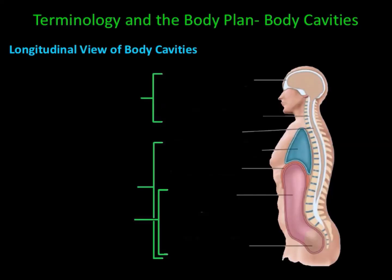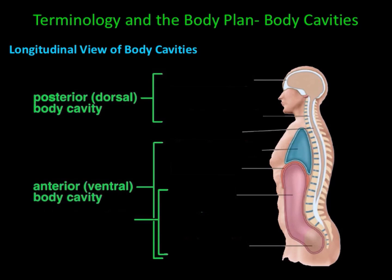In this video, we're going to talk about body cavities and serous membranes. A cavity in the human body is an open area in which you can find organs. There are two major body cavities: the posterior or dorsal body cavity, and the anterior or ventral body cavity. Each of these cavities can be further subdivided. The posterior cavity has two subdivisions: the cranial cavity and the vertebral canal.